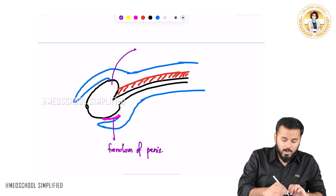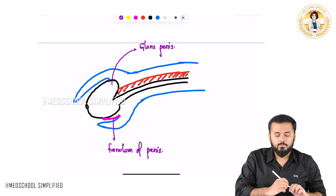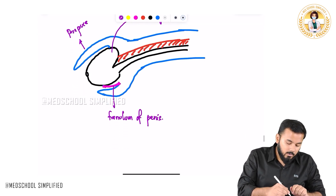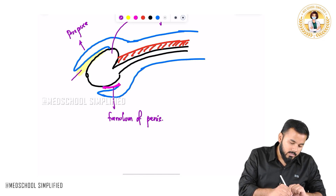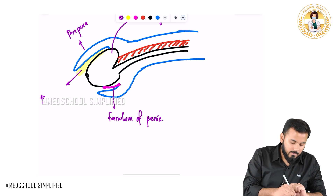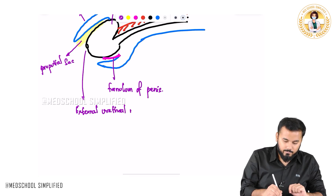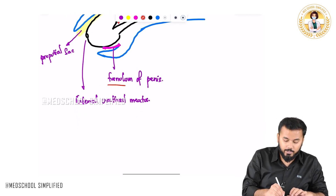This part which is bulged out is called glans penis. And this part over here is called the prepuce — prepuce of the penis. Just below the prepuce, this part which I am highlighting with the green or yellow is called the prepucial sac. And not to forget, this opening is called the external urethral meatus.